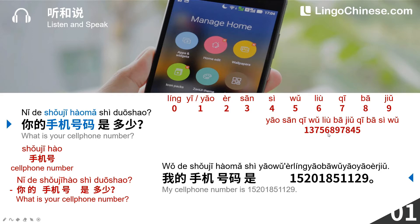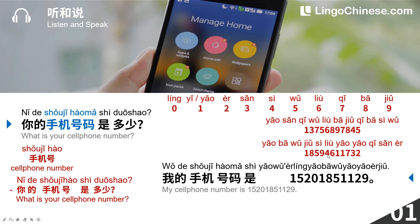我的手机号码是1375-689-7845。我的手机号码是1859-461-1732。